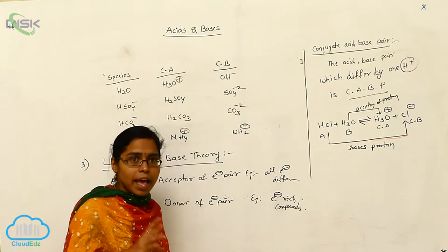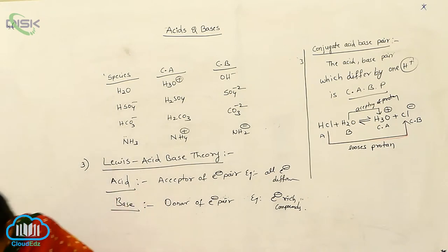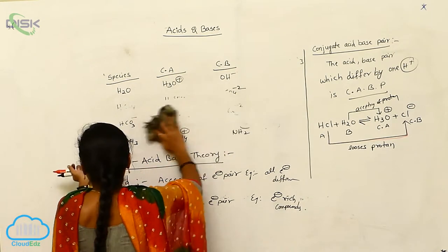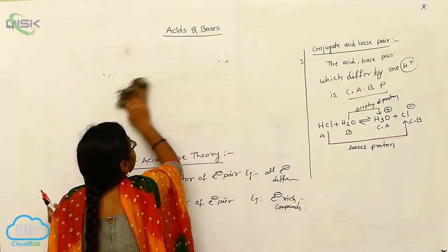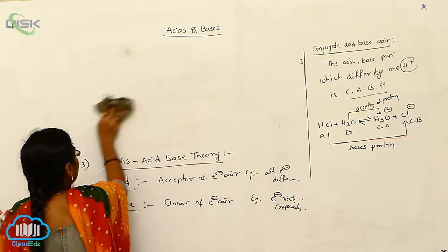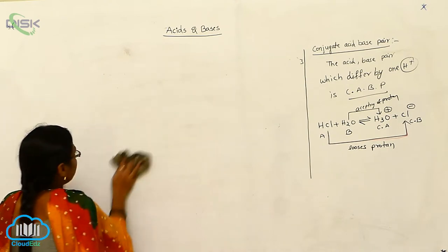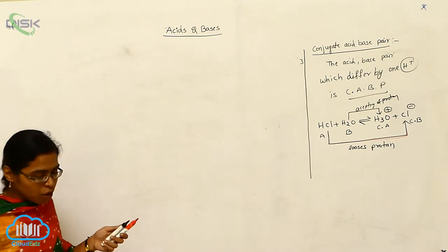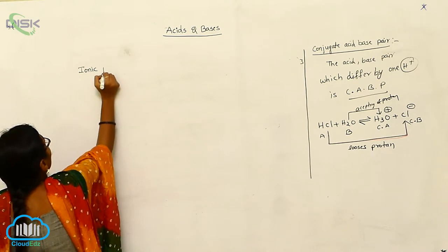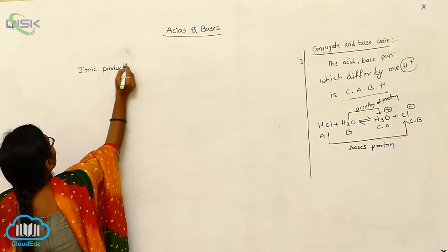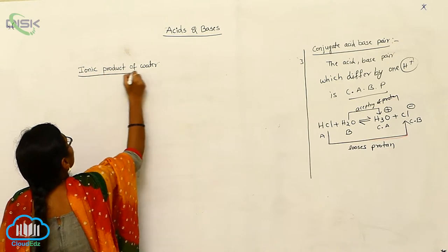In the introduction to acid-base theory, we have covered three theories: number one Arrhenius theory, number two Brønsted theory, and number three Lewis acid-base theory. Next we move into the topic of the ionic product of water.